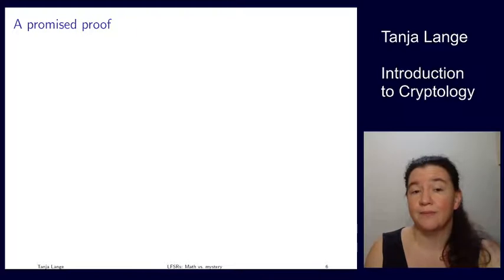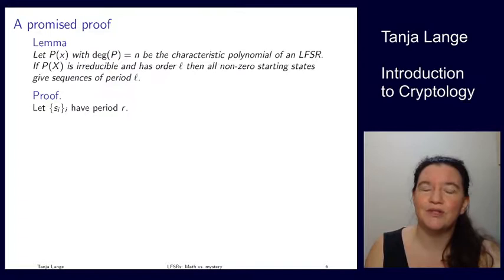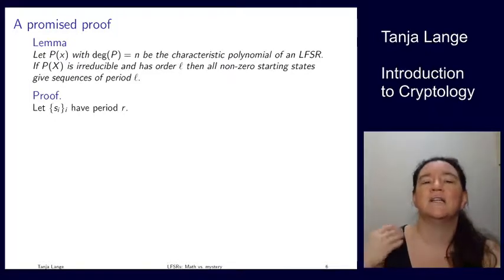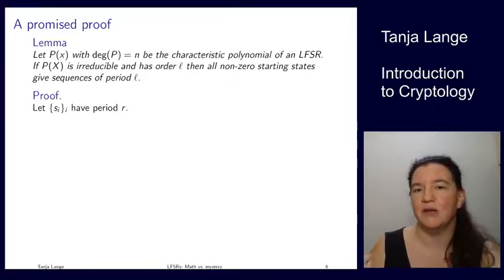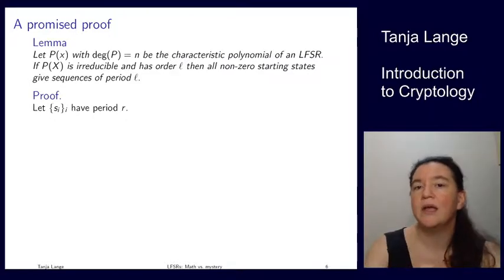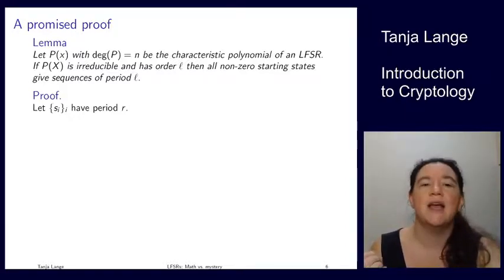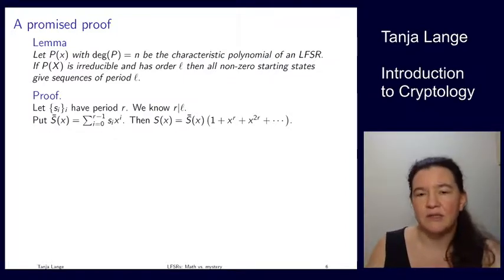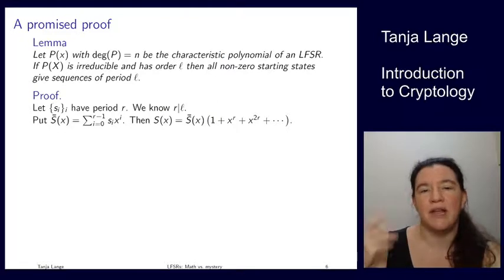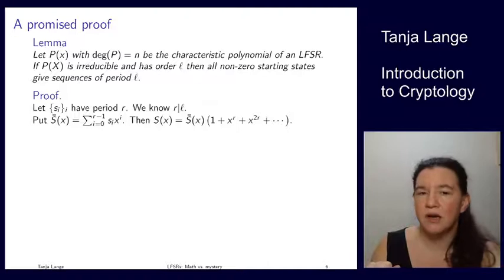Now I promised a different proof. Namely, I promised that if you have a polynomial which is an irreducible characteristic polynomial but not of full order — so you don't get 2 to the n minus 1 as the order — then still all non-zero starting states have the same sequence length. We did this example where we had only order 5, and concluded that the 2 to the 4th = 16 states split into 5, 5, 5, and 1. But I haven't proved that yet. So let's assume there is some period R. And we know that if the order of the polynomial is L, which is the same as the order of the state update matrix, then any period divides that order — so R is a divisor of L.